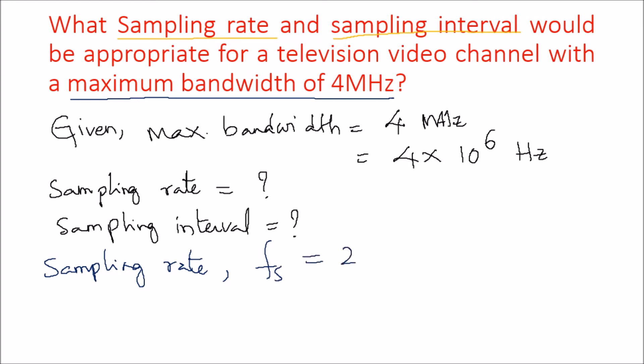Which is given as 2fm as per the sampling theorem. Given maximum bandwidth is fm which is equal to 4 times 10 to the power 6 hertz. Sampling rate will become 2 times 4 megahertz, which equals 8 megahertz.